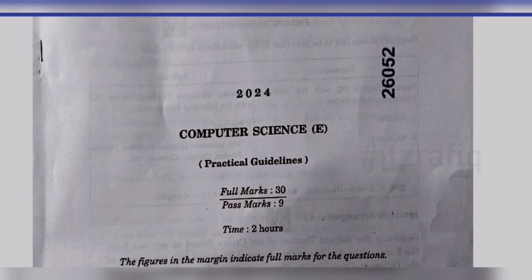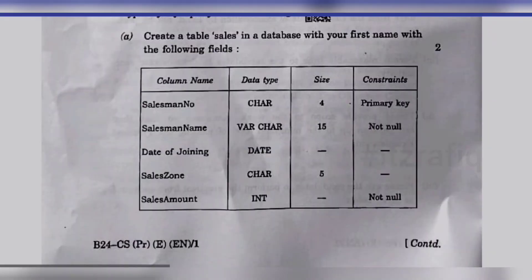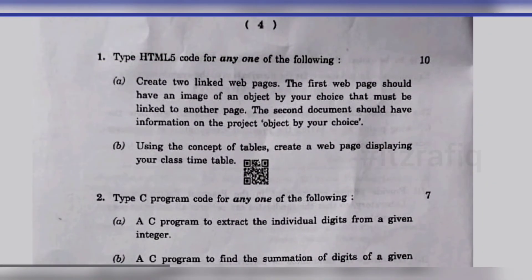Here comes the first page. The first question is: create two linked web pages. The first page should have an image of any object of your choice, and that image must be linked to another page. The second document should have information about that object. Clicking the image on the first page will take you to the description on the second page — this is the link question.